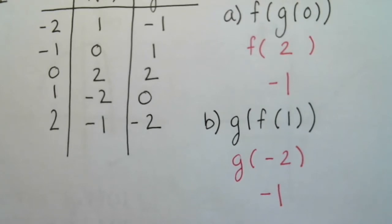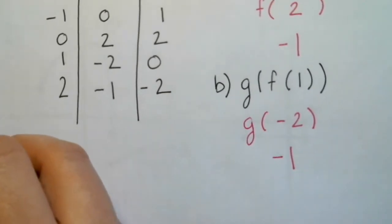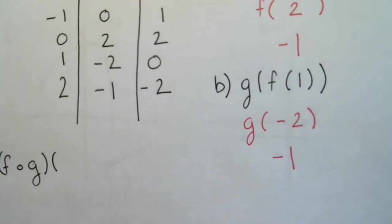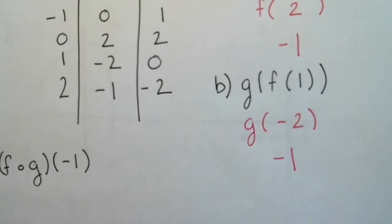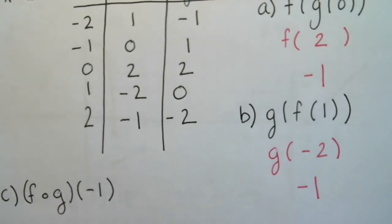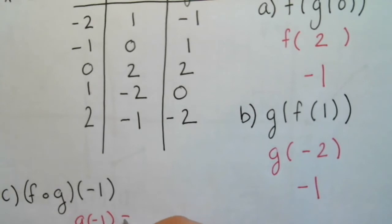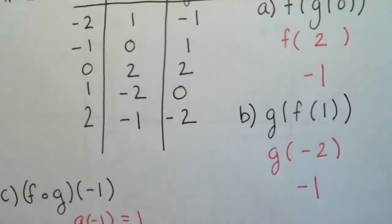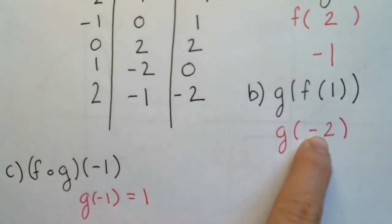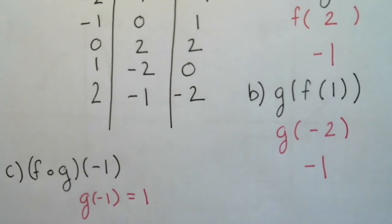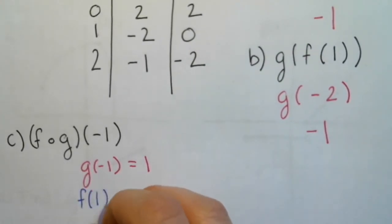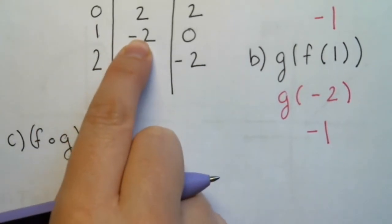Let's look at some examples with the other notation. We have f composed with g of negative 1. The first step is to plug in g of negative 1, which equals positive 1. Then we take that answer and plug it into f. So f of 1 is negative 2.